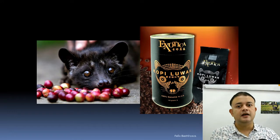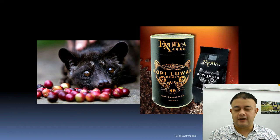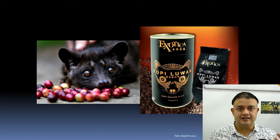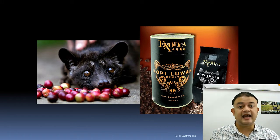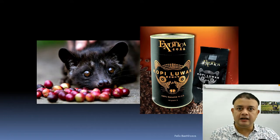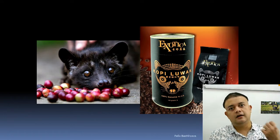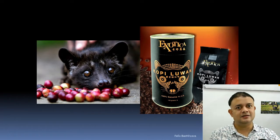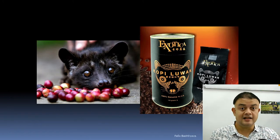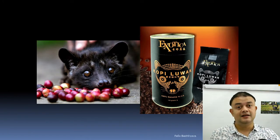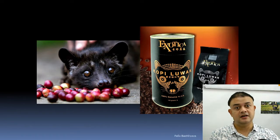Kopi Luwak is basically natural selection mediated by humans. These days, however, instead of foraging for excrement in the forest, producers captive-breed the civets — they put them in cages, feed them beans, and collect the excrement. That is not a really great way to leverage natural selection. The best approach is free-ranging the civet in the forest.